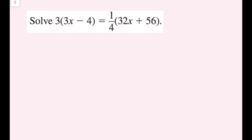For this example, we have 3 times the quantity 3x minus 4 equals one-fourth times the quantity 32x plus 56. I do not have simplified sides on either the left or the right. I need to distribute the parentheses on both sides. I'll start by distributing the 3 on the left side: 3 times 3x is 9x, and 3 times negative 4 is negative 12. So I'm going to rewrite this.